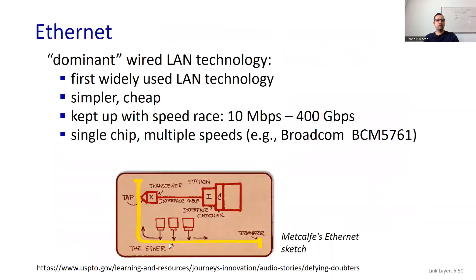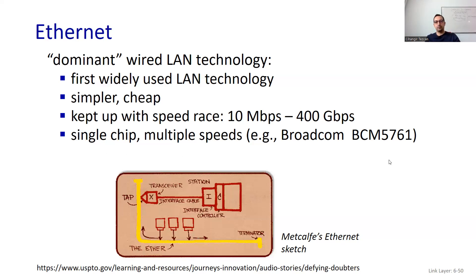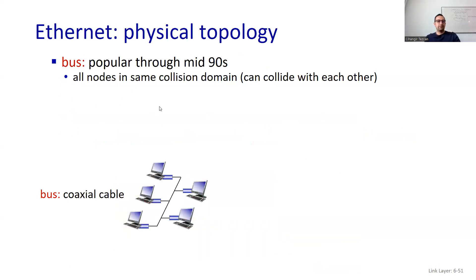Let's move on to the Ethernet protocol — the dominant wired local area network technology. It was the first widely used LAN technology: simpler and cheap. There were many proposed variants, but Ethernet was the winner because it received many updates. Initially, Metcalf introduced it at about 2.54 megabits per second; it was updated to 10 megabits per second as the first standard. Nowadays, depending on your network adapter and cables, you can reach up to 400 gigabits per second. Physical topology: the bus was popular through the mid-90s, where all nodes are in the same collision domain and can collide with each other using coaxial cable — this is why we talk about multiple access.